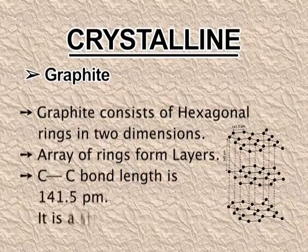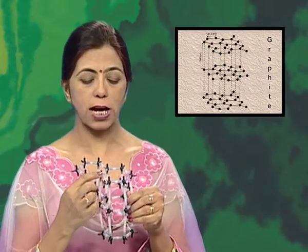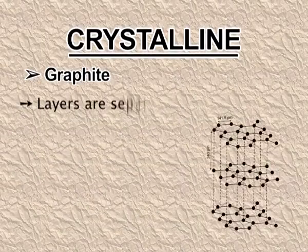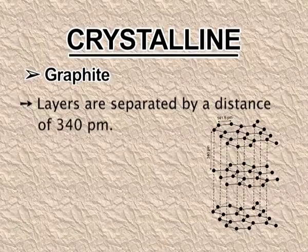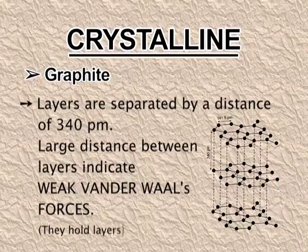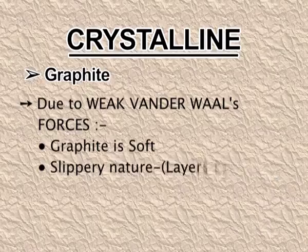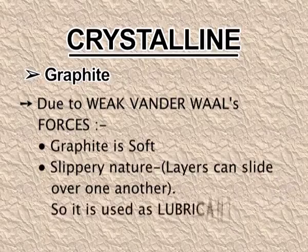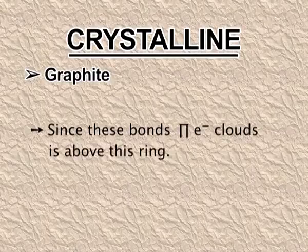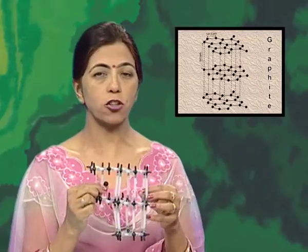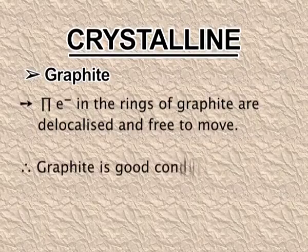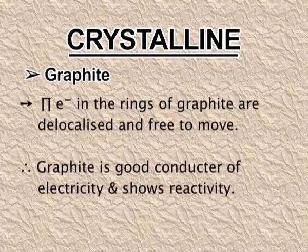The array of rings forms layers. The carbon-carbon single bond length in graphite is 141.5 picometers, indicating a very strong bond. The layers are separated by a distance of 340 picometers and are held together by weak van der Waals forces. Due to these weak van der Waals forces, graphite is soft and slippery in nature, and is used as a solid dry lubricant — similar to how talcum powder is sprinkled on a carom board. The delocalized pi electron cloud makes graphite a good conductor of electricity.